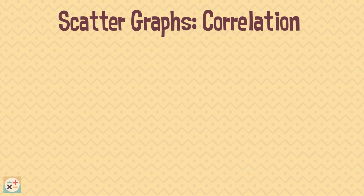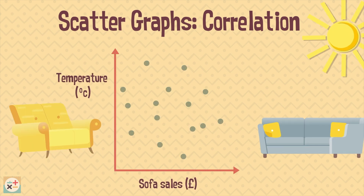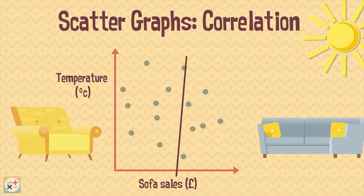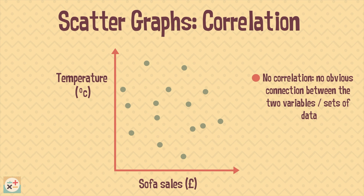What if the scatter graph looked like this? We can see that the sales of sofas has no obvious relationship to the temperature. We would say there is no correlation.